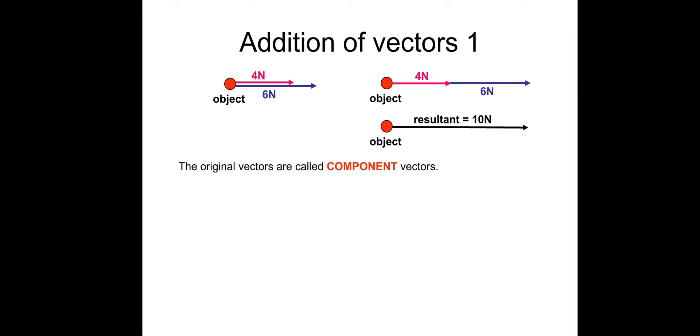Addition of vectors. Quite intuitive, this. Pretty straightforward. Obviously, a 4 and a 6 to the right. I'm sure you can guess what that is. 10 newtons. Note, it says resultant. So the original vectors are called components. These are the component vectors. And the final vector, after you've added them together, they're called the resultant vectors.